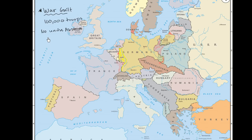On top of that, Germany loses its colonies — colonies we've already talked about. These are colonies in Africa, colonies in Asia, and colonies in the Pacific.